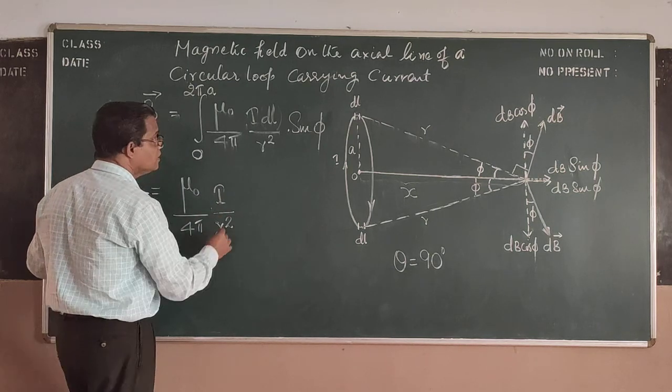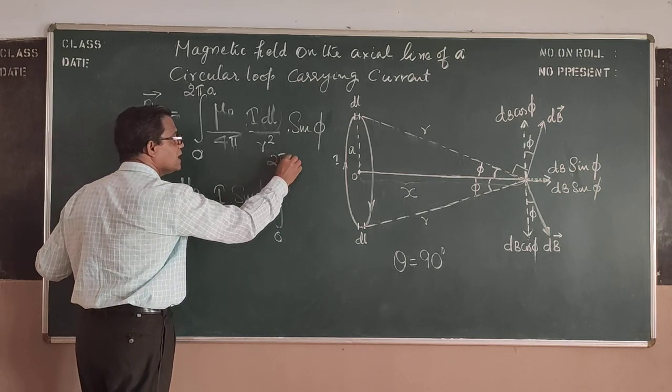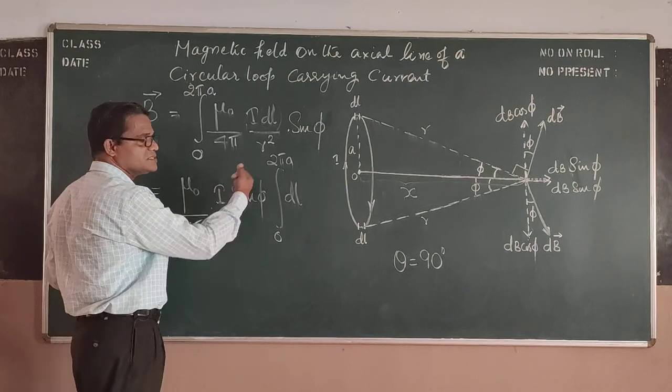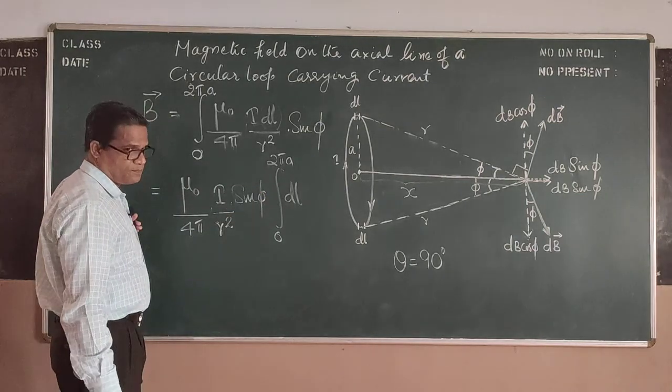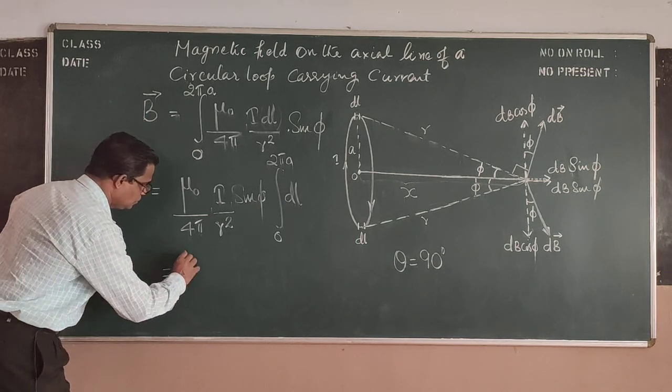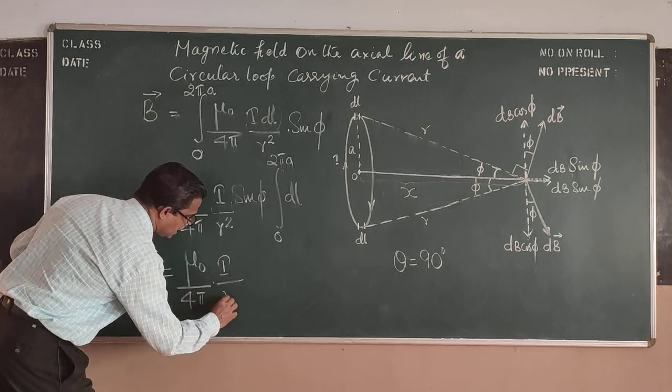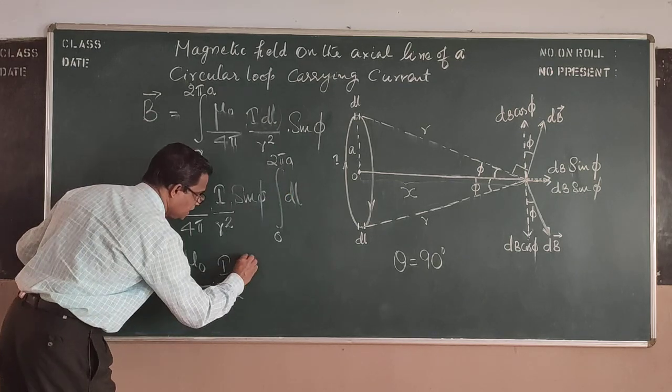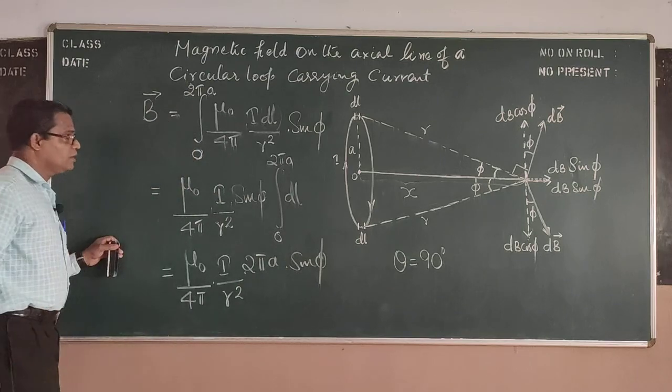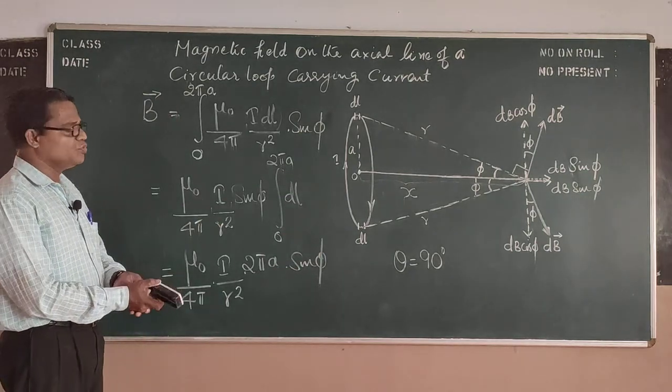Now you integrate this you get mu_0 by 4 pi into I by R square into sine phi into integral 0 to 2 pi A of dl because all other quantities are constant as far as this figure is concerned. And therefore that will be equal to mu_0 by 4 pi into I by R square into 2 pi A into sine phi.